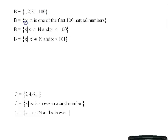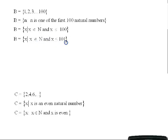In set builder notation, set B could be written as the set of all n such that n is one of the first 100 natural numbers, or more compactly: the set of all X such that X ∈ N and X ≤ 100. An equivalent way to write this is the set of all X such that X is a natural number and X < 101. Either way, the natural numbers up to and including 100 are 1, 2, 3, up to 100.